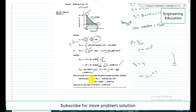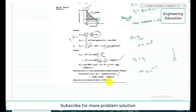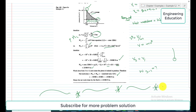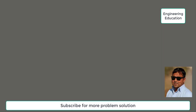Combining all work done: W_net = W₁₂ + W₂₃ + W₃₁ = −50,000 + 25,000 + 0 = −25,000 Newton-meters. The net work done by the fluid is −25,000 Newton-meters, meaning the cycle work is negative — work is done on the system. This concludes the discussion of example 1.2. In the next video, we will discuss example 1.3. Thank you.